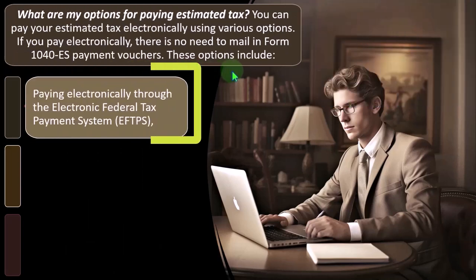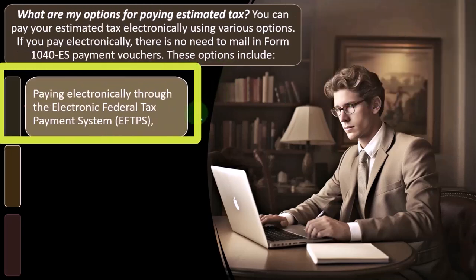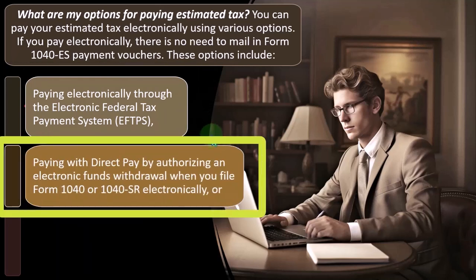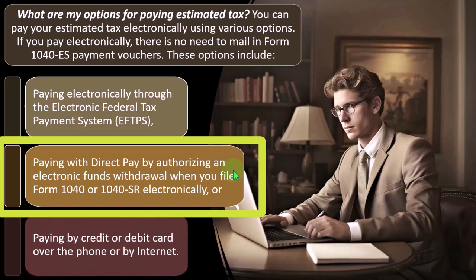Options for paying taxes electronically include the Electronic Federal Tax Payment System, otherwise known as EFTPS, or direct pay by authorizing an electronic funds withdrawal when you file Form 1040 or 1040-SR electronically. Many times when you file the return using tax software, the software may have the ability to do electronic transfers, which generally requires your bank's routing number and account number.